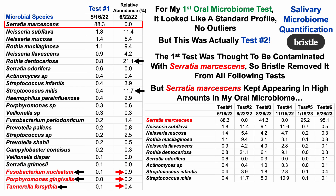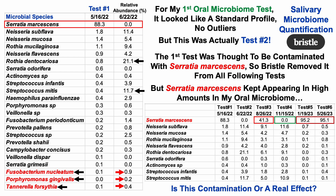But Serratia kept appearing in very high amounts in my oral microbiome. Although it went down to 41% for test number three, and somehow went to zero for test number four, we can see that for tests five and six it went even higher to 95% of all bacteria. Only 5% of my oral microbiome being non-Serratia marcescens is just outrageous.